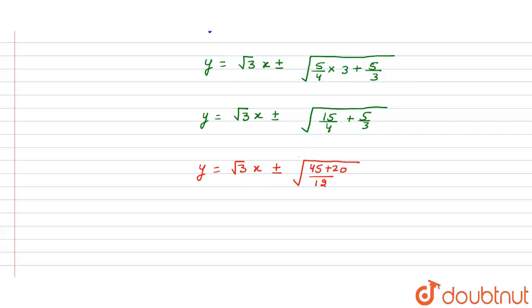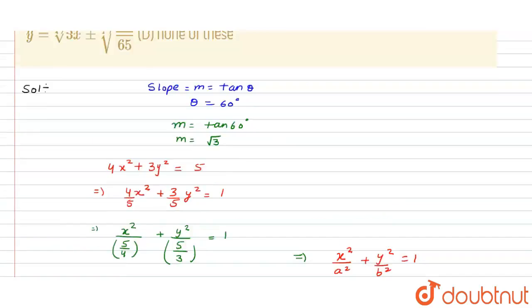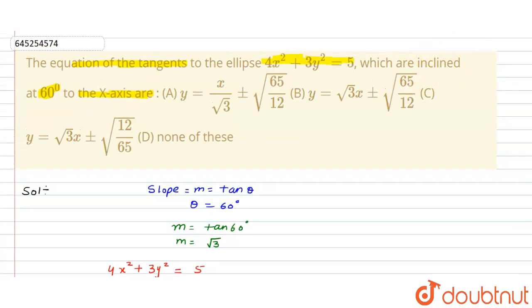Solving further, we get y = √3·x ± √(65/12). This is the equation of the tangent: y = √3x ± √(65/12). Checking the options, option B is the right answer: y = √3·x ± √(65/12).